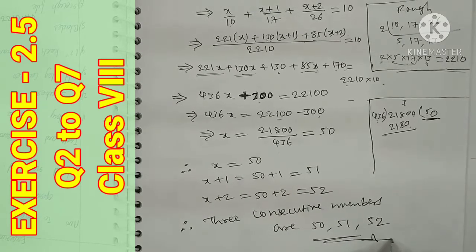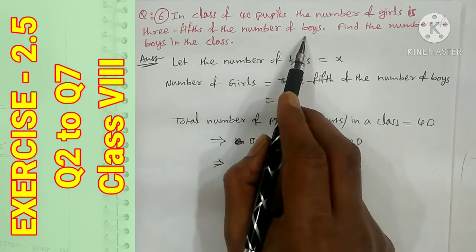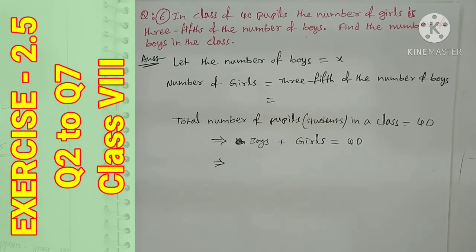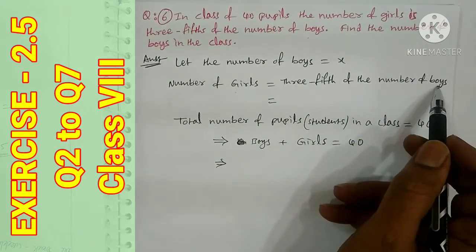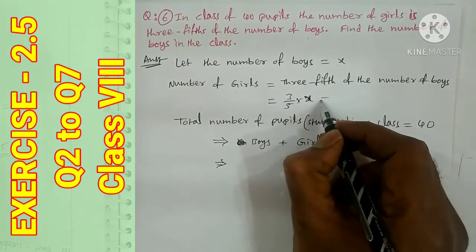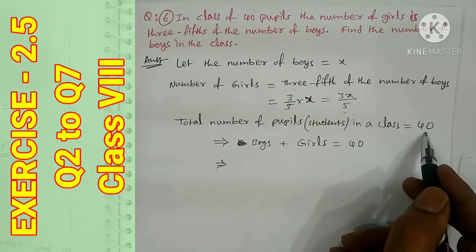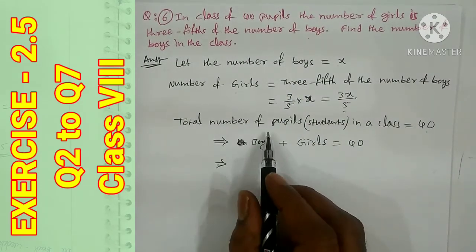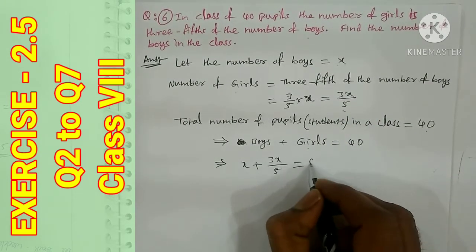Question number 6: In a class of 40 people, the number of girls is 3/5 of the number of boys. Find the number of boys in the class. We let the number of boys be x. Then the number of girls is 3/5 of x, which is 3x/5. Total students: boys plus girls equals 40, so x plus 3x/5 = 40.